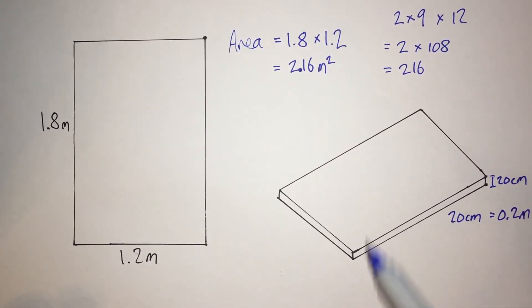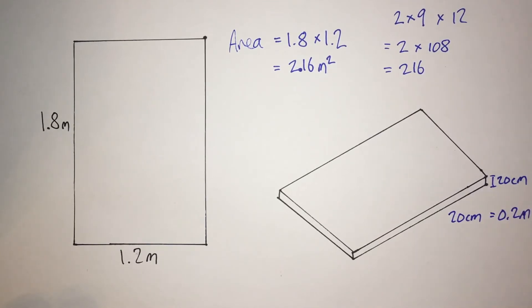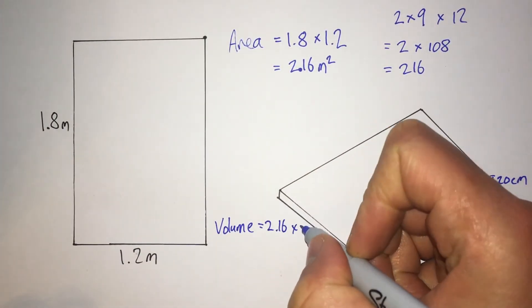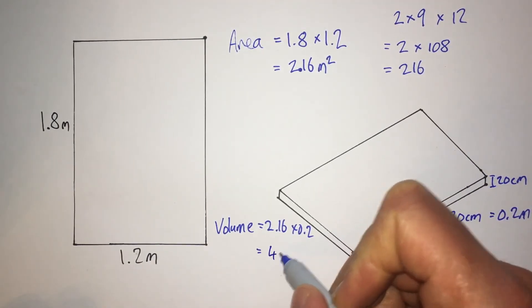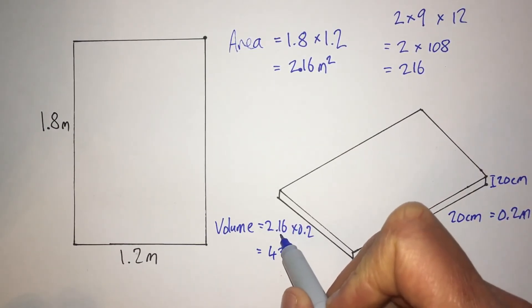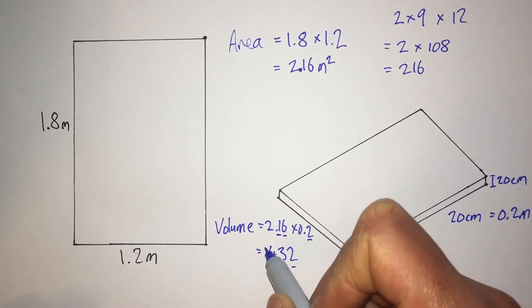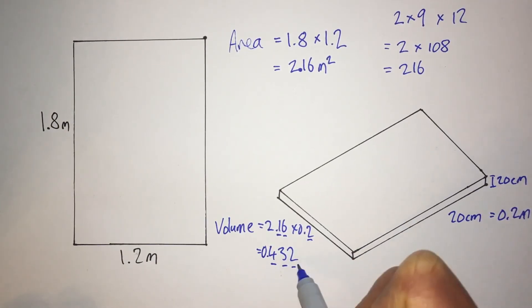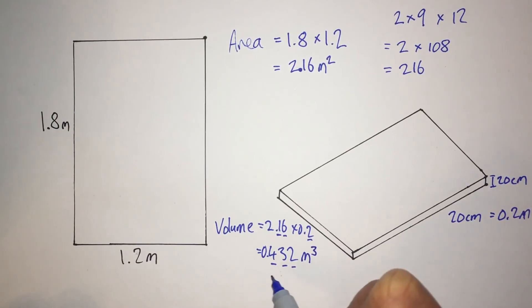Now that all my measurements are in meters, I can work out the volume of this space. To calculate the volume, I work out the area of one of the cross sections — which I've already calculated — and multiply it by the depth. So 216 multiplied by 2 is 432, and matching decimal places gives 0.432 meters cubed. So I will need 0.432 meters cubed of concrete for my base.